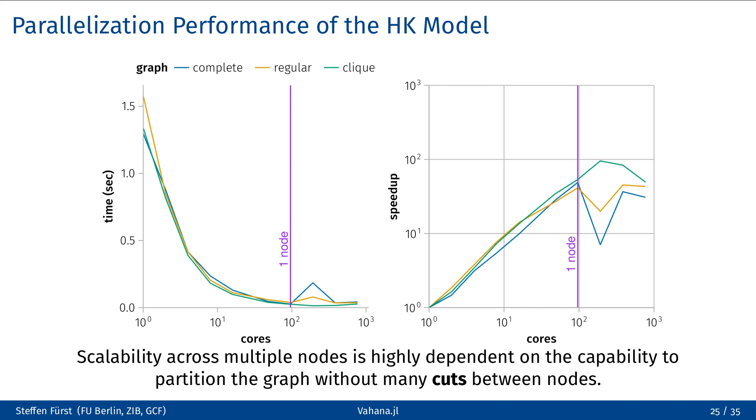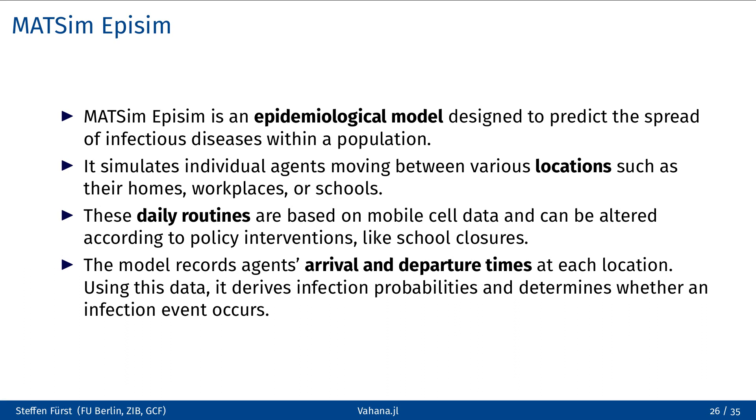Next, we take a look at an existing large-scale model, namely MATSIM-EpiSIM, an epidemiological model that is very computationally intensive and can benefit significantly from a framework like Vahana. MATSIM-EpiSIM is designed to simulate the spread of infectious diseases among individuals. In this model, agents navigate between different locations, such as their homes, workplaces or schools, following daily routines based on mobile cell data. Each location records the arrival and departure times of the agents. Based on this data, the likelihood of each agent getting infected is calculated. In a previous project, I worked on the multithreaded parallelization of this model, which is written in Java. Now, I have recreated also an early version of MATSIM-EpiSIM using Vahana.